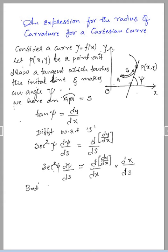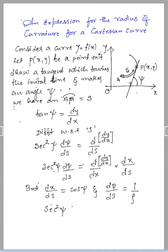So, this is nothing but cos psi. We can define d psi by ds as 1 over rho. Therefore, substituting all this, we are going to get the above equation as: sec squared psi into 1 by rho, which is equal to d squared y by dx squared into cos psi, as we are differentiating dy by dx with respect to x again.